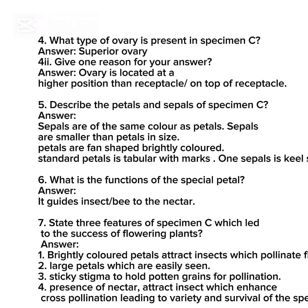Question five: describe the petals and sepals of Specimen C. Answer: sepals are of the same color as petals; sepals are smaller than petals in size; petals are fan-shaped and brightly colored; the standard petal is tubular. One sepal is keeled. This is how you can describe the petals and sepals of a Pride of Barbados flower. Question six: what is the function of the special petal? Answer: it guides insects or bees to the nectar.